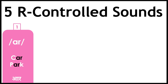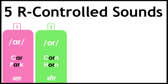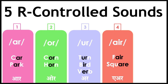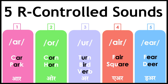Now let's look at the five R-controlled sounds: /ɑːr/ — car, park; /ɔːr/ — corn, horn; /ɜːr/ — tur, bird; /ɛr/ — air, fair, square; /ɪr/ — ear, fear, deer. These are the five R-controlled sounds.